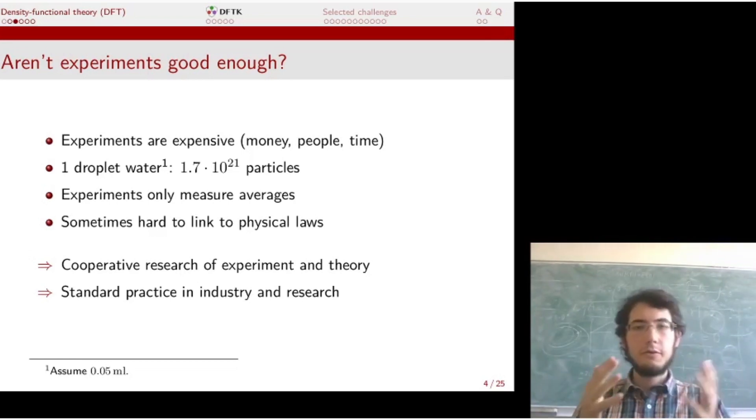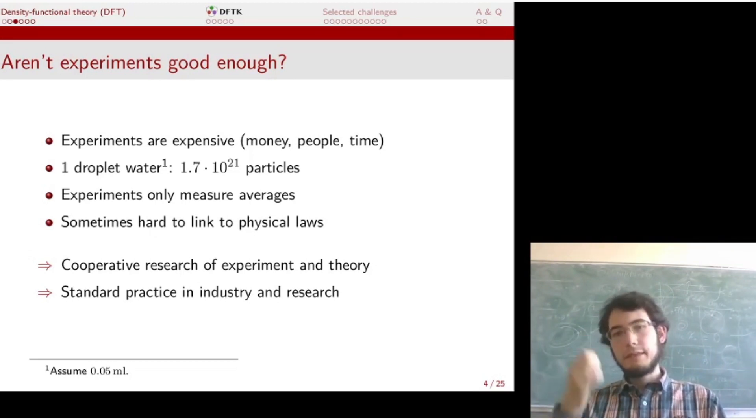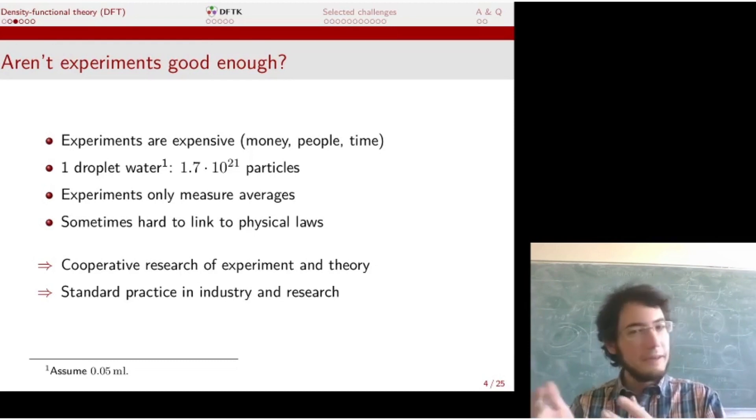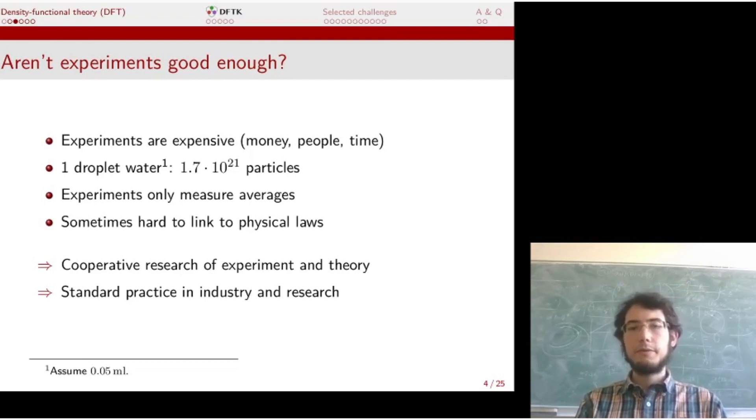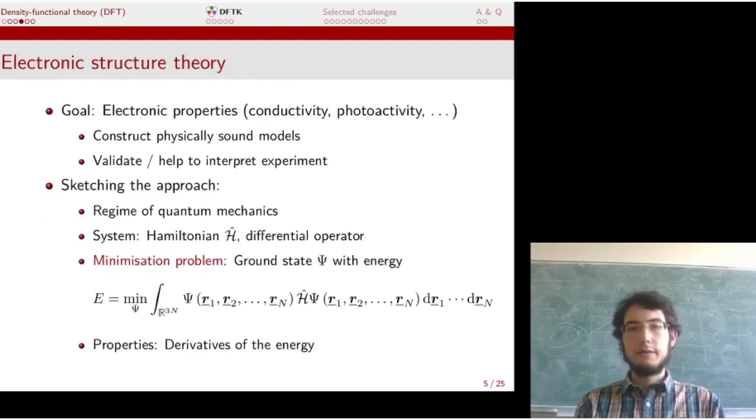You might ask—I'm talking about chemistry and labs. Aren't experiments good enough? Well, it turns out experiments are expensive. Computers are much cheaper than people's time. But also there's a problem with interpretation because just one drop of water is a huge number of particles—1.7 times 10 to the 21. If you do an experiment, the result is just an average. Averages are not always easy to interpret, and it's not always easy to make links to physical laws. So in electronic structure theory, it's about cooperative research with experimentalists and theoretical developments to bring together what we know and extrapolate to what we don't know. Nowadays, it's standard practice in industry and research. Even in organic chemistry, papers are usually not accepted if you don't have calculation results which back some of your statements. So it's really a joint project between experimentalists and theoreticians.